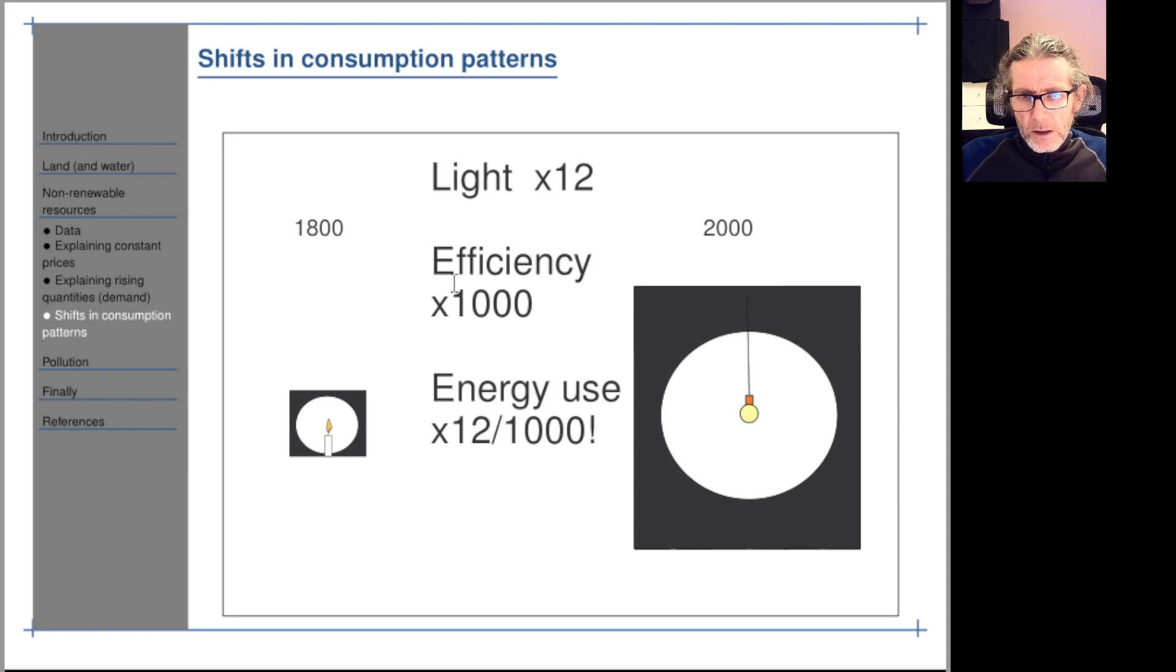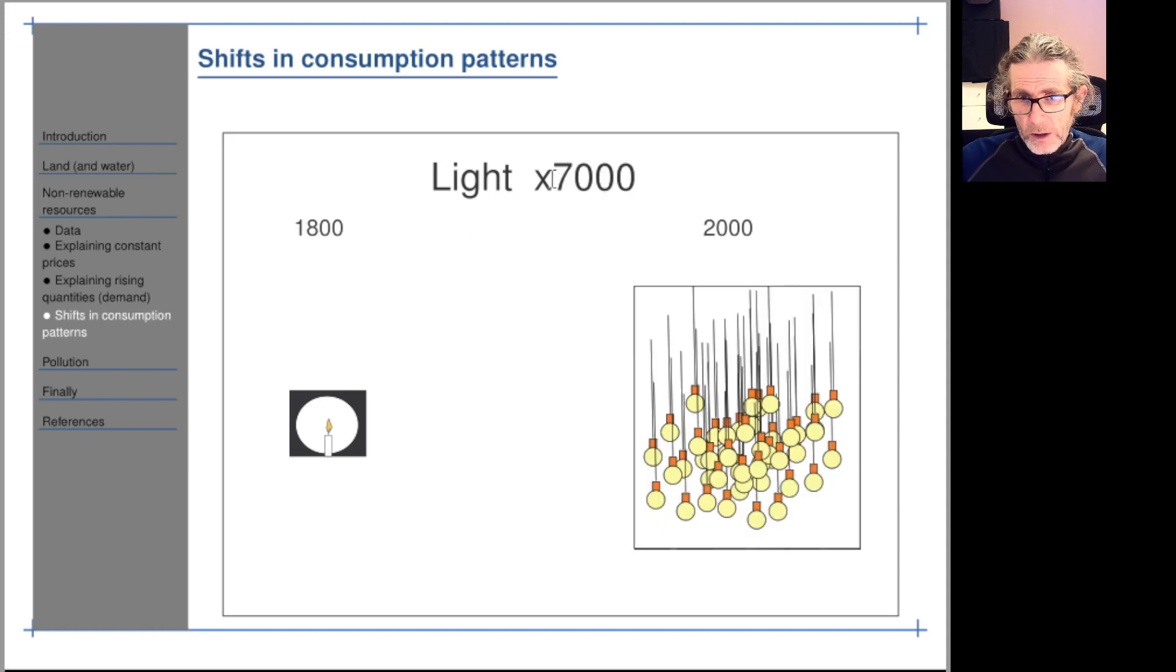Why, if light consumption has gone up by a factor of 7,000 per person, hasn't GDP gone up by 7,000 per person? It's because our consumption of other stuff that's important to us has hardly gone up at all, or much much less.